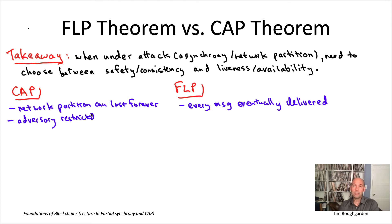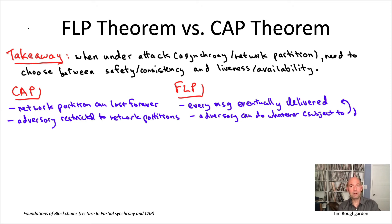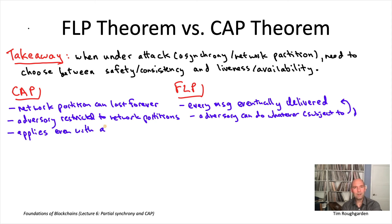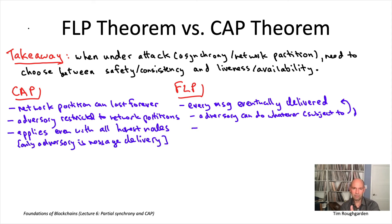In the CAP theorem, the adversary doesn't have to deliver messages — it can just throw them away permanently. On the other hand, in the CAP setting you don't even need faulty nodes. Each of the nodes running the protocol could be honest, and the CAP theorem still applies. The FLP impossibility result, on the other hand, really does assume there are faulty nodes — granted, only one faulty node, but one is more than zero.